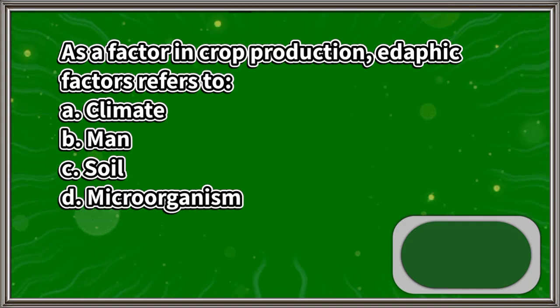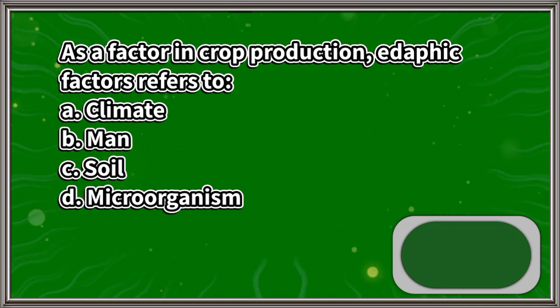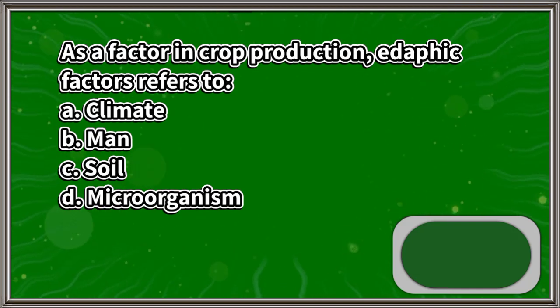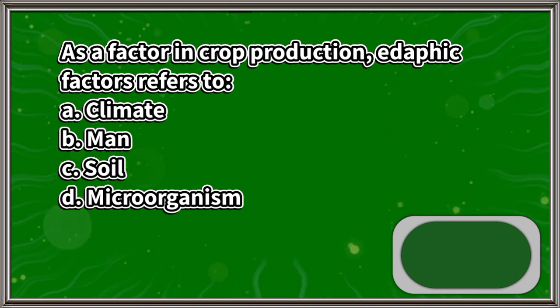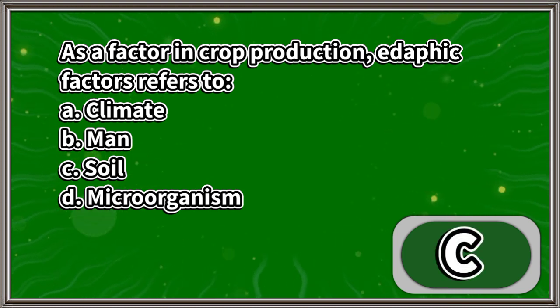As a factor in crop production, edaphic factors refers to: A. Climate, B. Man, C. Soil, D. Microorganism. The answer is letter C.